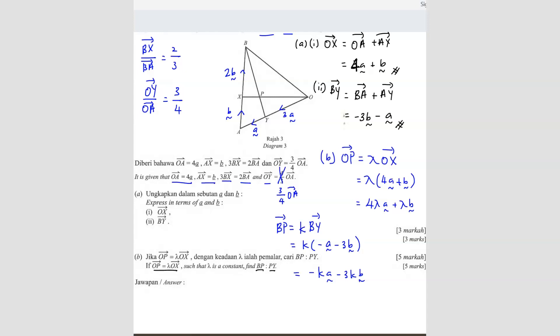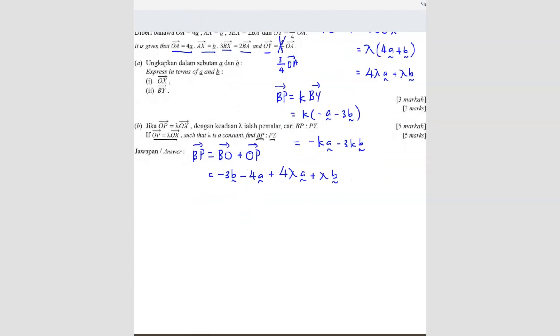Now BP. Can we form any equation with BP or not? We cannot find that. OP. Do we have OP? Yes. We do have OP. So that means BP here, we can form another equation. The equation would be BP equals to BO plus OP. Why I'm using OP? Because we already found the OP here. We already found OP. So now we have to find BO. BO will be negative 3B minus 4A. So this is BO plus OP. OP will be 4 lambda A plus lambda B. Why are we doing this? Because we got two equation of BP now. We got two equation. So we can combine later.